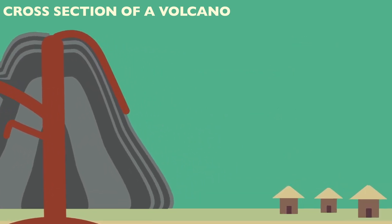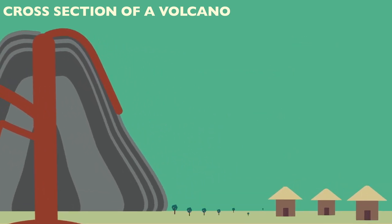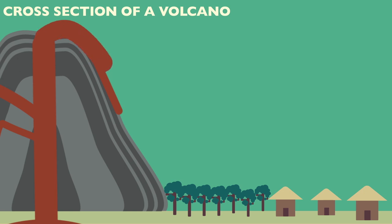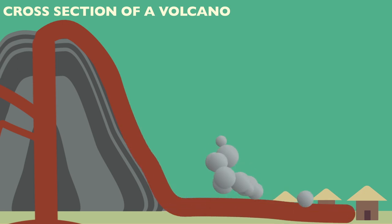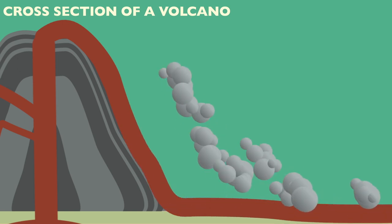The land around a volcano is rich in minerals, resulting in fertile soils ideal for agriculture. But living in the vicinity of a volcano can be very dangerous.